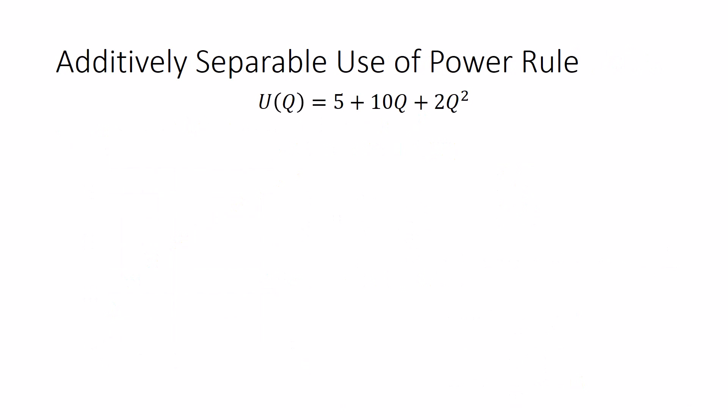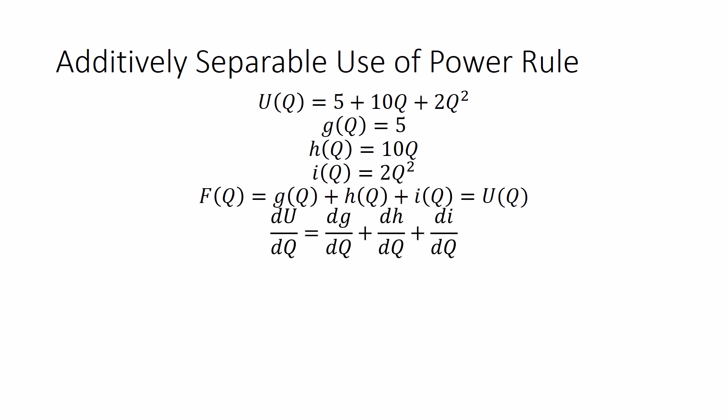The fact that we can add them separately means we can apply the power rule in even more settings. I could have a utility function that looks like this. This is a bigger, more complex function. Side note, it also violates our diminishing marginal utility assumption, but let's ignore that for now. Utility is equal to 5 plus 10q plus 2q squared. Well, you can break this into functions. There's a g(q), which is just 5. There's an h(q), which is 10q. There's an i(q), which is 2q squared. I've broken it into additively separable pieces. So the big f(q) is equal to g(q) plus h(q) plus i(q), and that's our utility function.